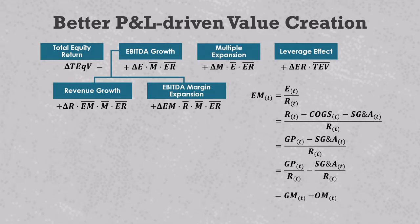You will not find this number on the quarterly report, but you can calculate it from the gross margin minus the EBITDA margin. And this means that we can define the EBITDA margin as the gross profit margin minus the operating expense margin. Since this is true, algebra says that it must also be true that the change in the EBITDA margin is equal to the change in the gross profit margin minus the change in the operating expense margin.